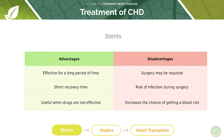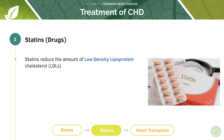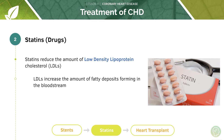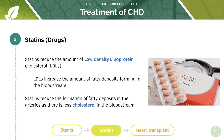Now let's look at drugs for the treatment of coronary heart disease. These drugs are known as statins, and statins work by reducing the amount of low density lipoprotein (LDL) in the body. We have two types of cholesterol: high density lipoprotein (HDL) and low density lipoprotein (LDL). HDLs are beneficial whereas LDLs increase the amount of fatty deposits forming in the bloodstream. Statins work by affecting an enzyme that synthesizes LDL cholesterol, thereby reducing the formation of fatty deposits in the arteries.